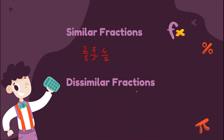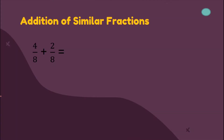When we say dissimilar fractions, these are fractions wherein they have different denominators. For example, one-fifth, two-sixths, and three over seven. As you have noticed, they have different denominators.